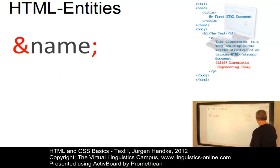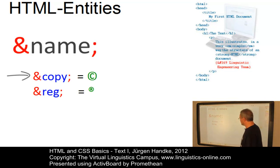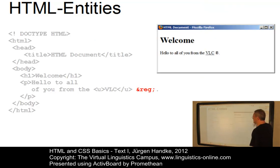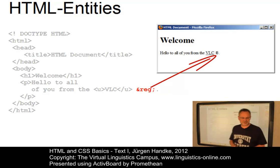Here are two examples. The first displays the copyright symbol. The entity name is copy. And the second displays the registered trademark symbol. The entity name is reg. Well, let's apply this to our example. Now, here you can see we added the reg, the registered trademark entity, and the browser nicely displays that the VLC is a registered trademark.